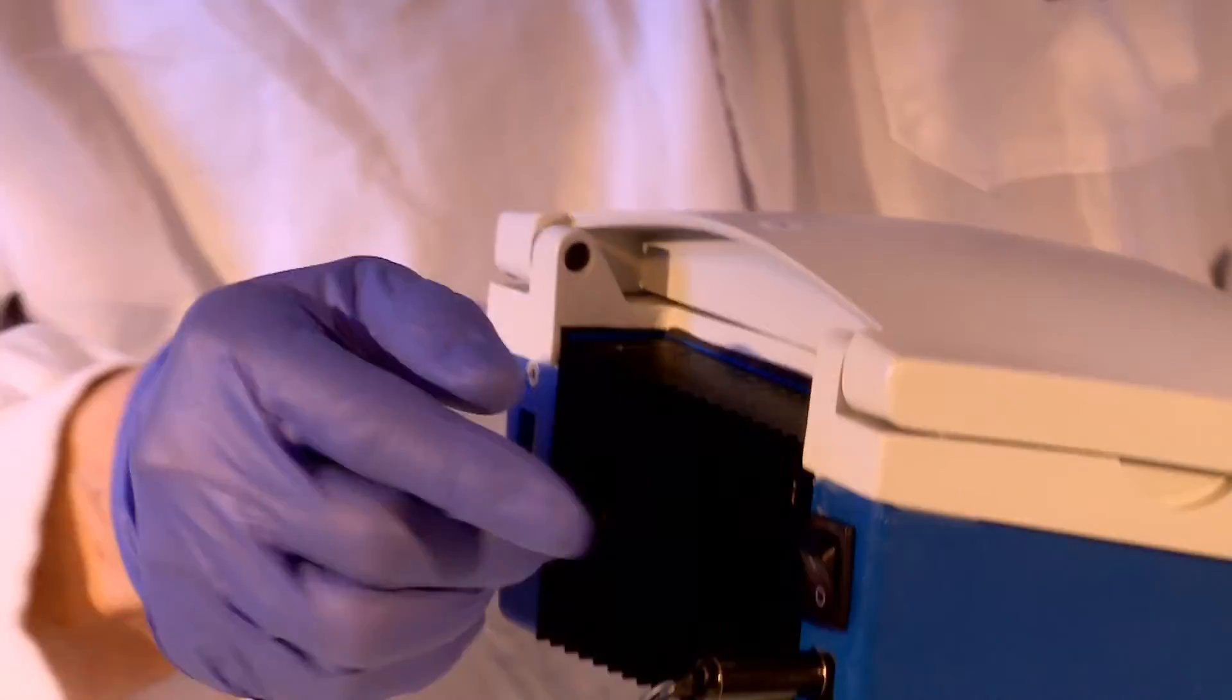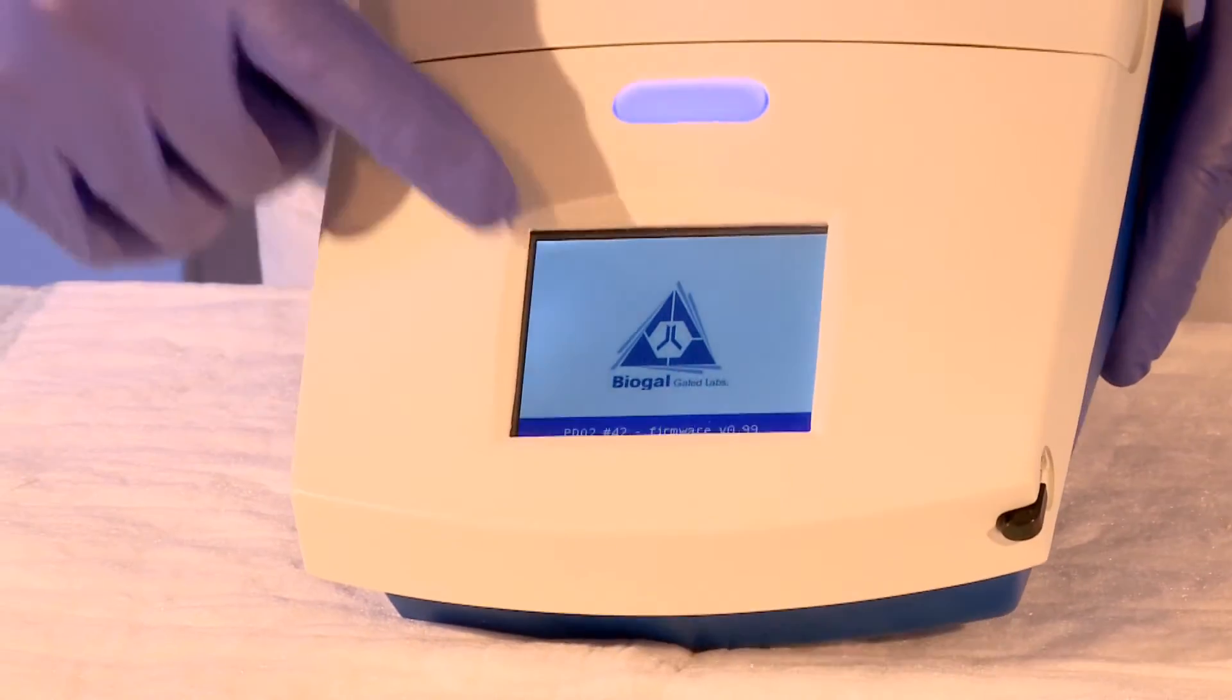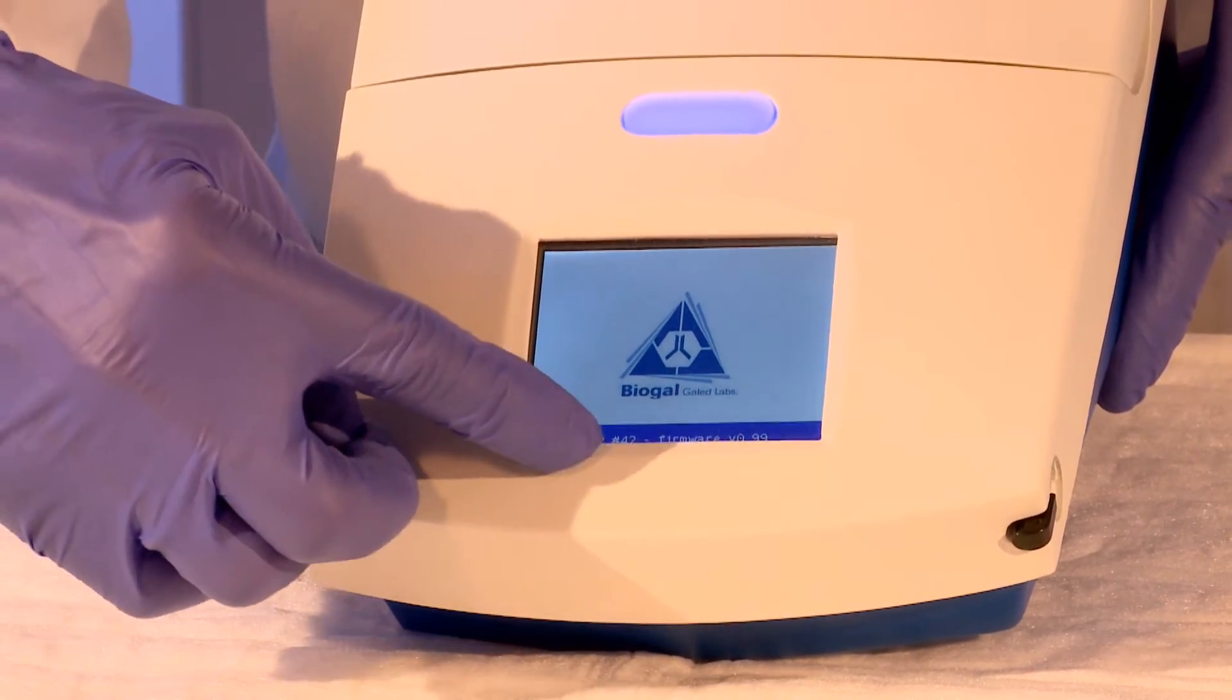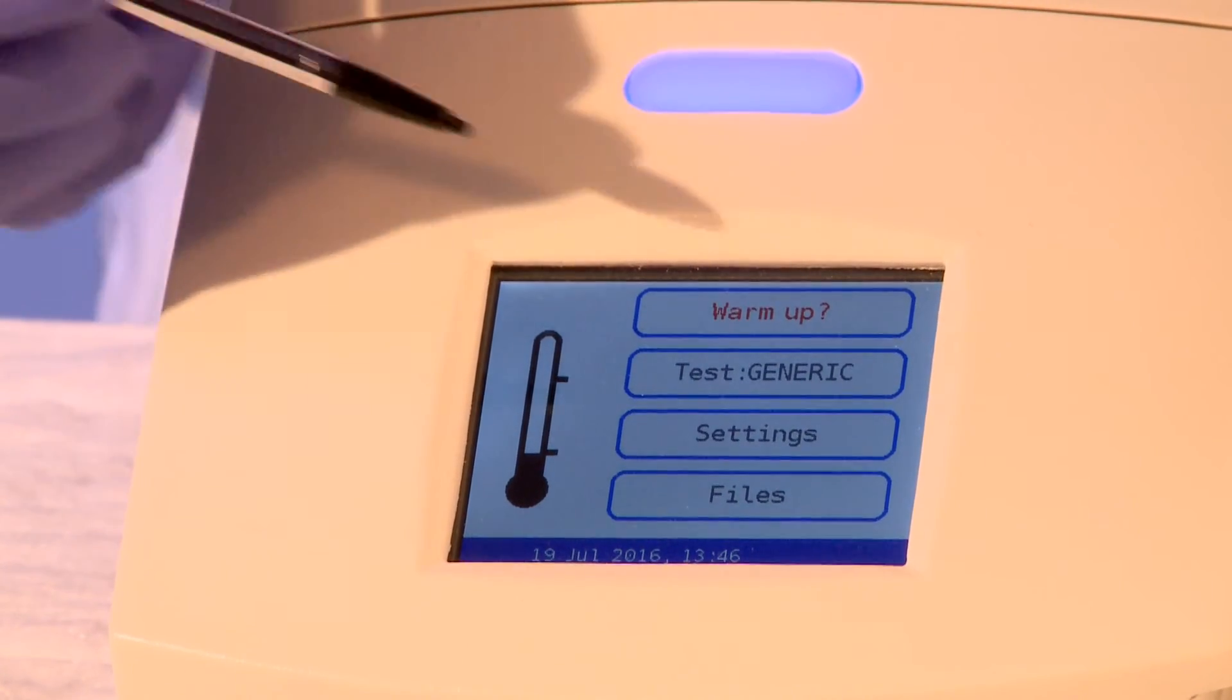Switch on the PC Run Reader using the on-off switch located on the back of the machine. The Biogal logo and pertinent information relating to the program will flash on the screen. The screen will stabilize with four options of operation.